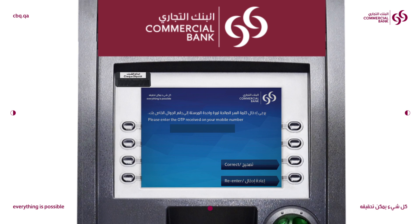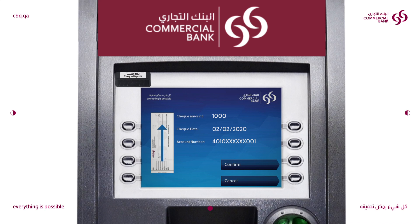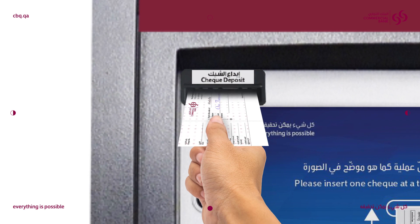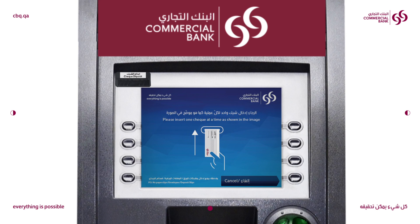You will receive a one-time password on your mobile phone. Enter the one-time password. Enter the check amount. Enter the check date and click on Confirm. Insert one check at a time as shown in the image. Please remember not to insert paper clips, envelopes or deposit slips.